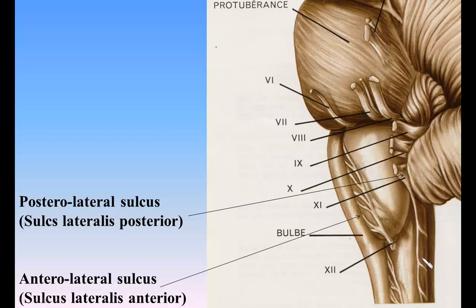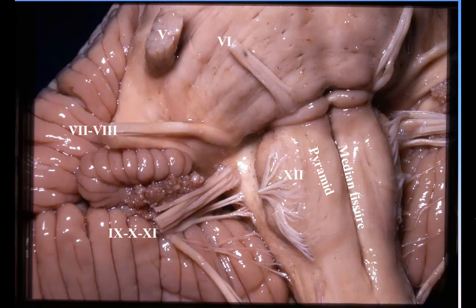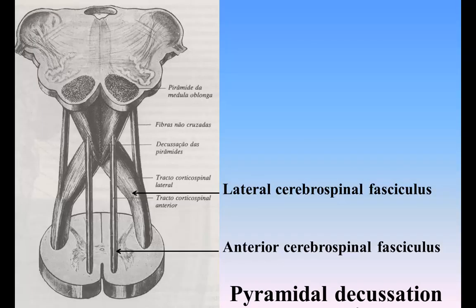Although these three districts appear to be directly continuous with the corresponding funiculi of the medulla spinalis, they do not necessarily contain the same fibers, since some of the fasciculi of the medulla spinalis end in the medulla oblongata while others alter their course in passing through it. The anterior district is named the pyramid (pyramus medullae oblongatae) and lies between the anterior median fissure and the anterior lateral sulcus. Its upper end is slightly constricted, and between it and the pons the fibers of the abducent nerve emerge. A little below the pons, it becomes enlarged and prominent and finally tapers into the anterior funiculus of the medulla spinalis. The two pyramids contain the motor fibers which pass from the brain to the medulla oblongata and medulla spinalis — corticobulbar and corticospinal fibers. When these pyramidal fibers are traced downward, it is found that some two-thirds or more of them leave the pyramids in successive bundles and decussate in the anterior median fissure, forming what is termed the pyramidal decussation.